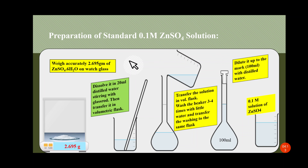Then dilute the solution up to the mark, that is up to 100 ml, with distilled water. Stopper the flask and make it homogeneous by shaking. Then transfer all the solution into a beaker. In this way we get 0.1 molar zinc sulfate solution — this is how we prepare the standard 0.1 molar zinc sulfate solution.